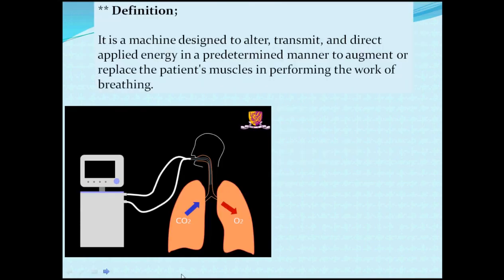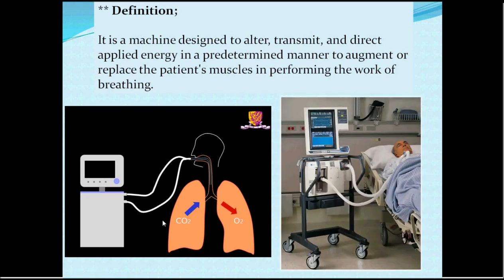This is the ventilator. It is meant to deliver pressure through a tube circuit to the patient — whether non-invasively through a face mask, or invasively through an endotracheal tube or tracheal tube — in order to deliver air to the lung itself. The ventilator is connected to electricity, air, and oxygen. The processing of this air takes place inside the ventilator to deliver pressure to the patient in a certain manner, and then the air heads back to the ventilator and exits outside.